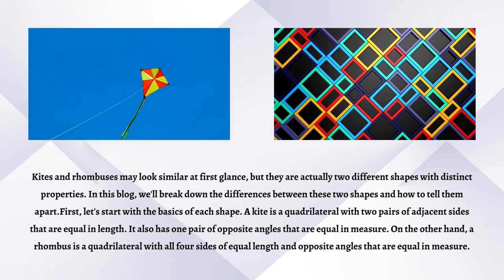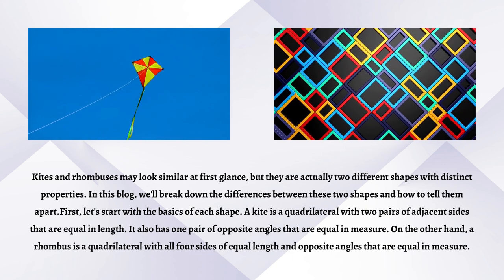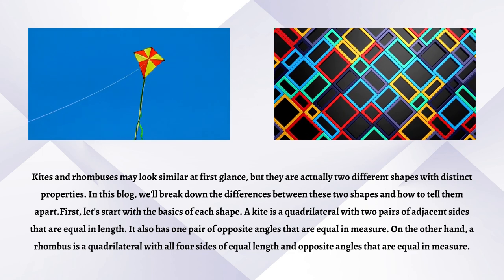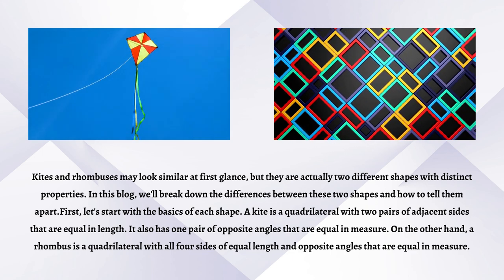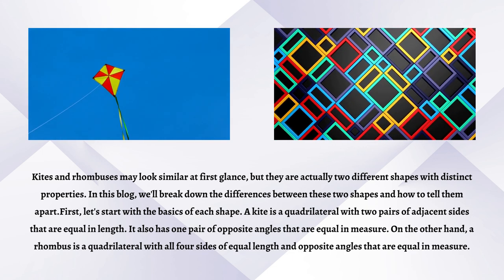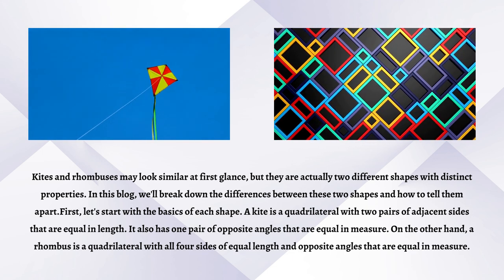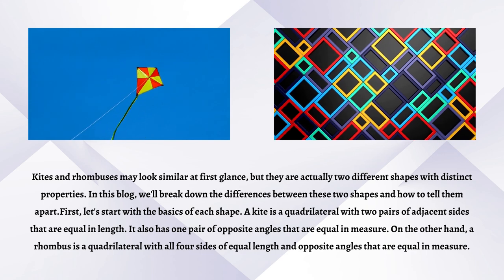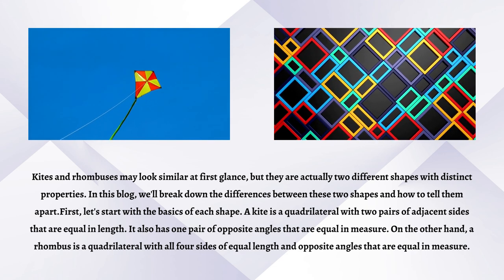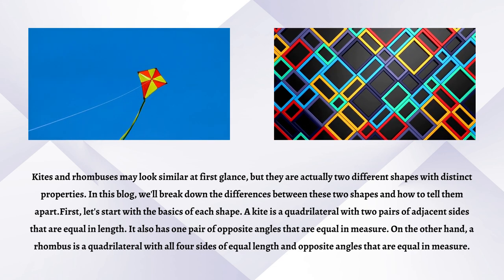A kite is a quadrilateral with two pairs of adjacent sides that are equal in length. It also has one pair of opposite angles that are equal in measure.